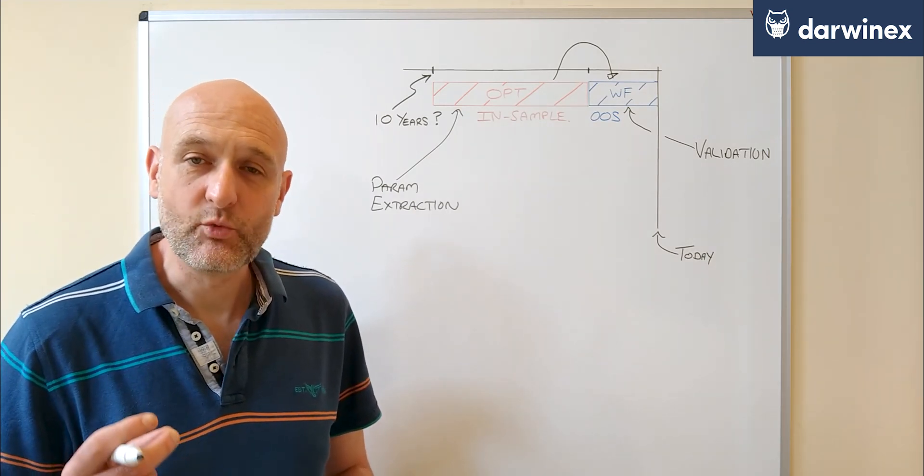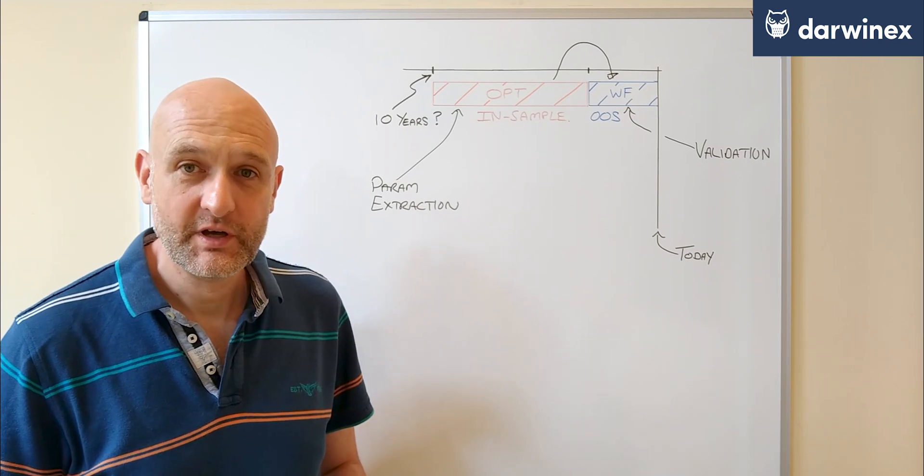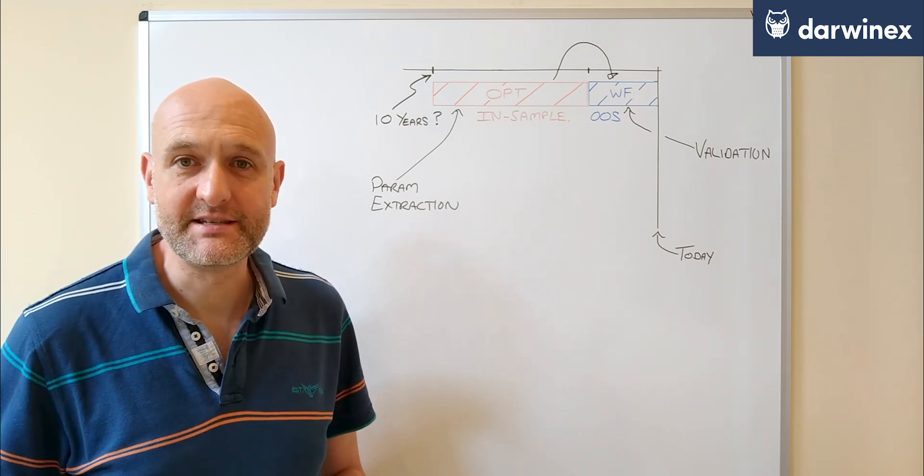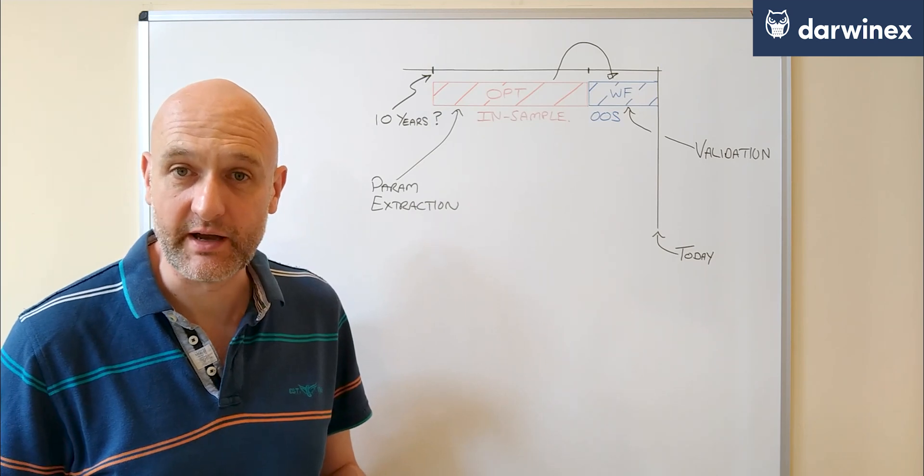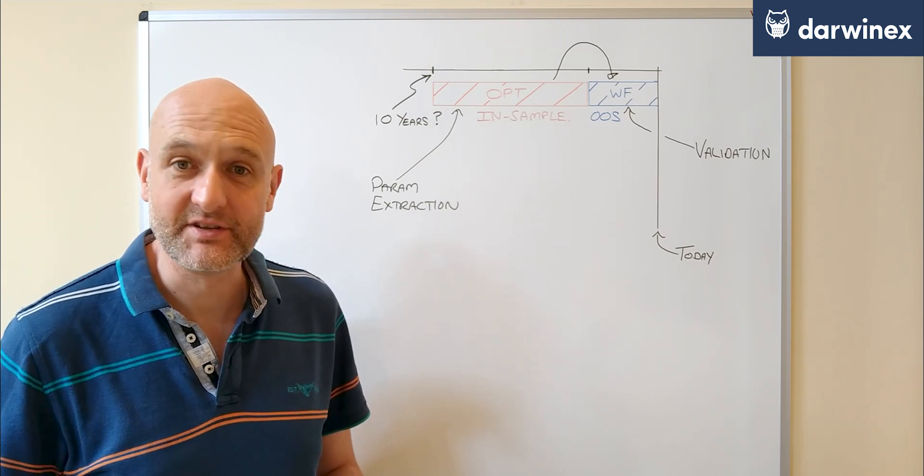And the data that is used for the walk-forward phase we call out-of-sample data, because it hasn't been used. The important point here is that when you perform a walk-forward, none of that out-of-sample data has ever been used to ascertain the parameter values that were used by it. If that were the case then the test would be flawed.